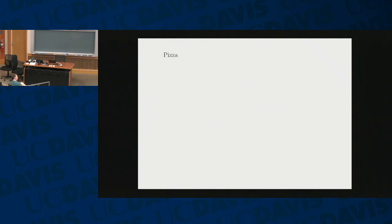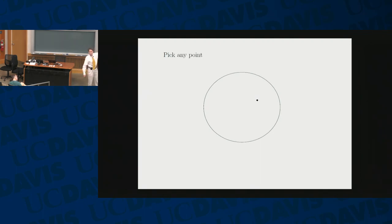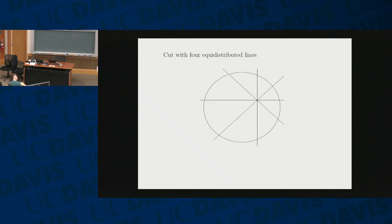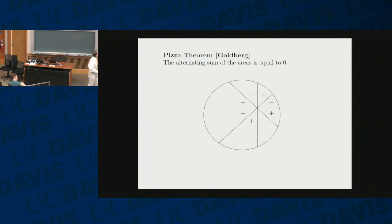So, pizza. I'm going to think about the round disk, and you want to share this fairly between two people. You're going to pick an arbitrary point in the pizza and cut it with four lines. Between two adjacent lines, they're going to be 45 degrees. Then, if you alternate the pieces, the two people will get the same amount of pizza. Isn't that cute?